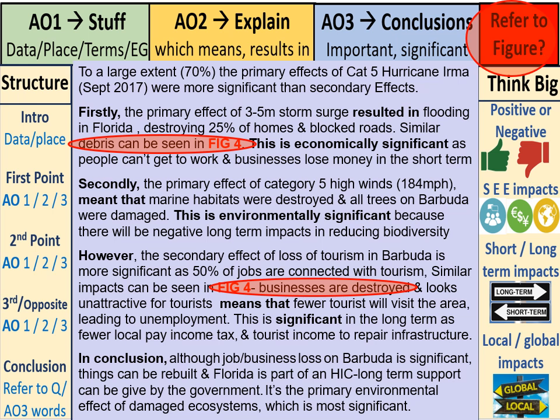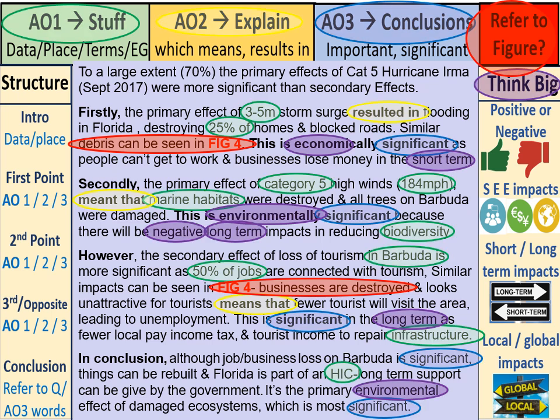You must refer to the figure as the question requires — weave information from it into your answer. Finally, here is a summary slide pulling everything together. Check how close your work is in terms of structure and AO1, AO2, and AO3. People often forget mini-conclusions at the end of each paragraph. Make sure you've included the figure and 'think bigs' such as positives/negatives, social/economic/environmental, and short and long term.